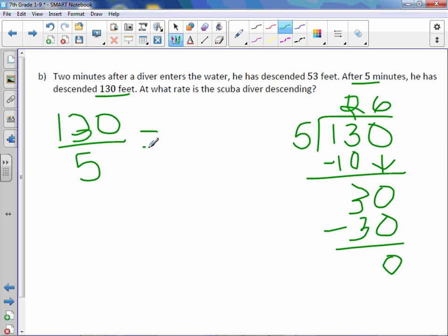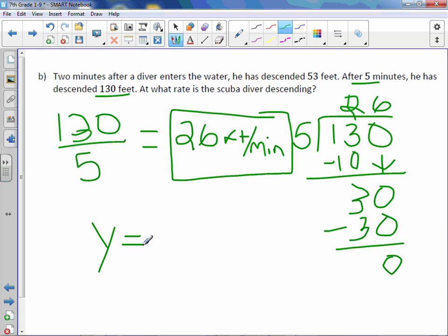So our rate is 26, and we are talking about feet in minutes. So feet per minute. Again, the constant of proportionality is 26, and if we wanted to write this as an equation, it would be y equals 26x.